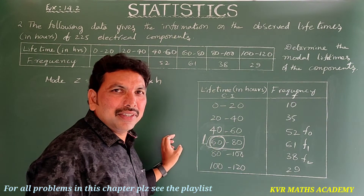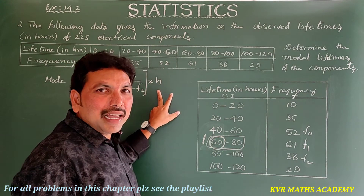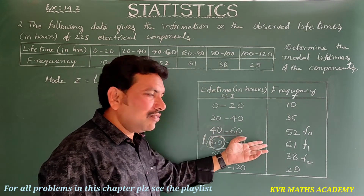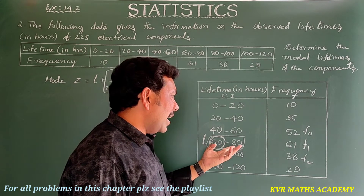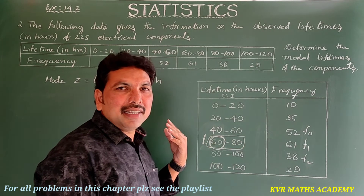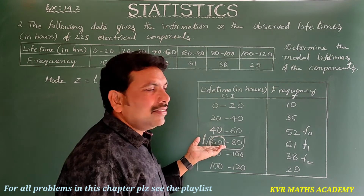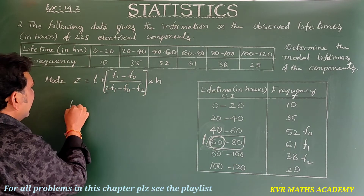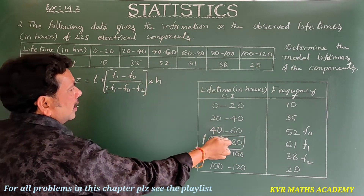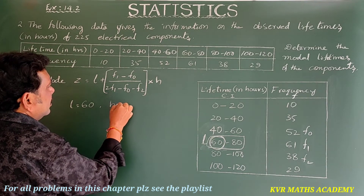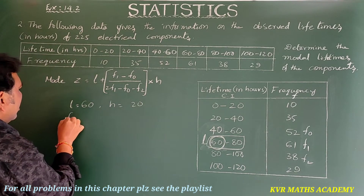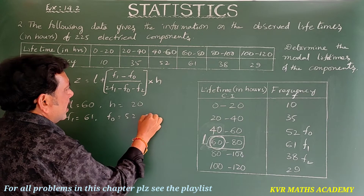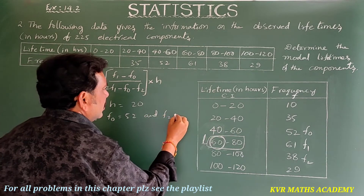The class size h is the difference between the upper and lower boundaries of the modal class: 80 − 60 = 20, so h = 20. To summarize: l = 60, h = 20, f1 = 61, f0 = 52, and f2 = 38.